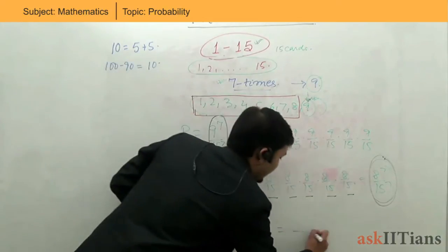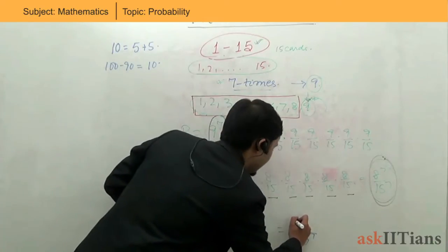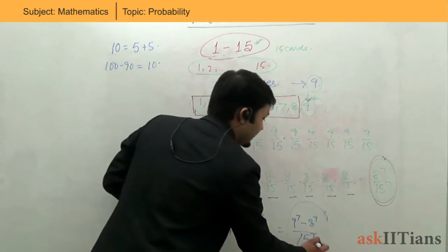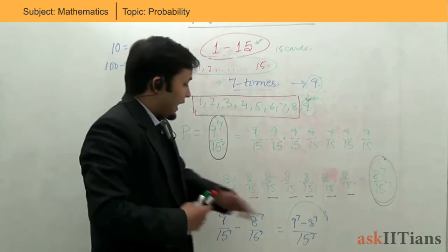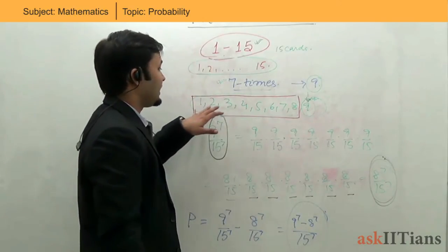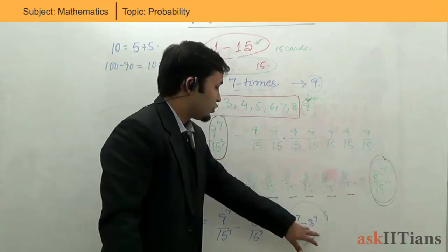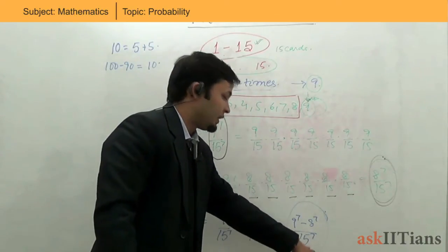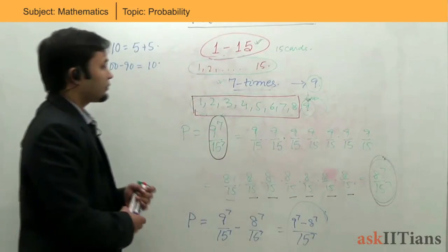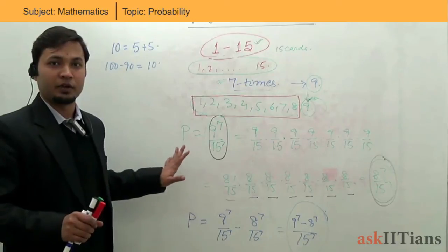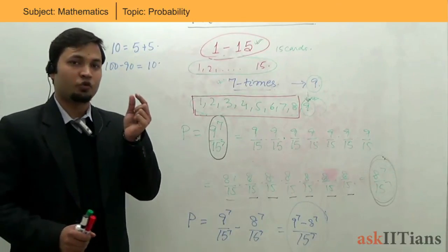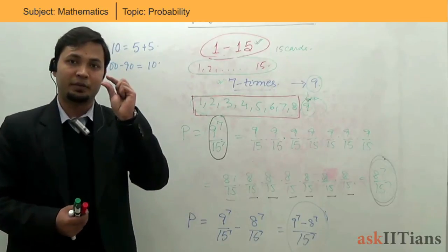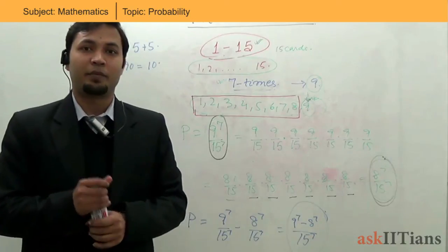You can represent the answer in any way. Please make sure that whenever you put up the final answer in probability, it doesn't necessarily have to be reduced to its simplest form, because this form actually states the facts of the question. 9 to the power 7 states that numbers are chosen from 1 to 9 each time; 8 to the power 7 represents those times where 9 cannot be obtained; and 15 to the power 7 represents all possible events. So that is it for the day — best wishes to you.